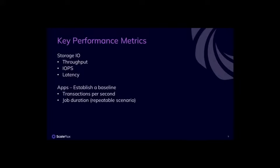Performance metrics are the heart of any evaluation. The specific metrics you focus on can vary based on whether you evaluate the underlying storage performance or an application-specific acceleration. For storage IO, you would typically look at throughput, IOPS, and latency. When it comes to application, it's more about transactions per second or time to complete a task. It's essential, though, to establish a baseline — what is the performance without computational storage? Once you have this baseline, you can measure the improvements contributed by computational storage and identify if there are any trade-offs in other important metrics.